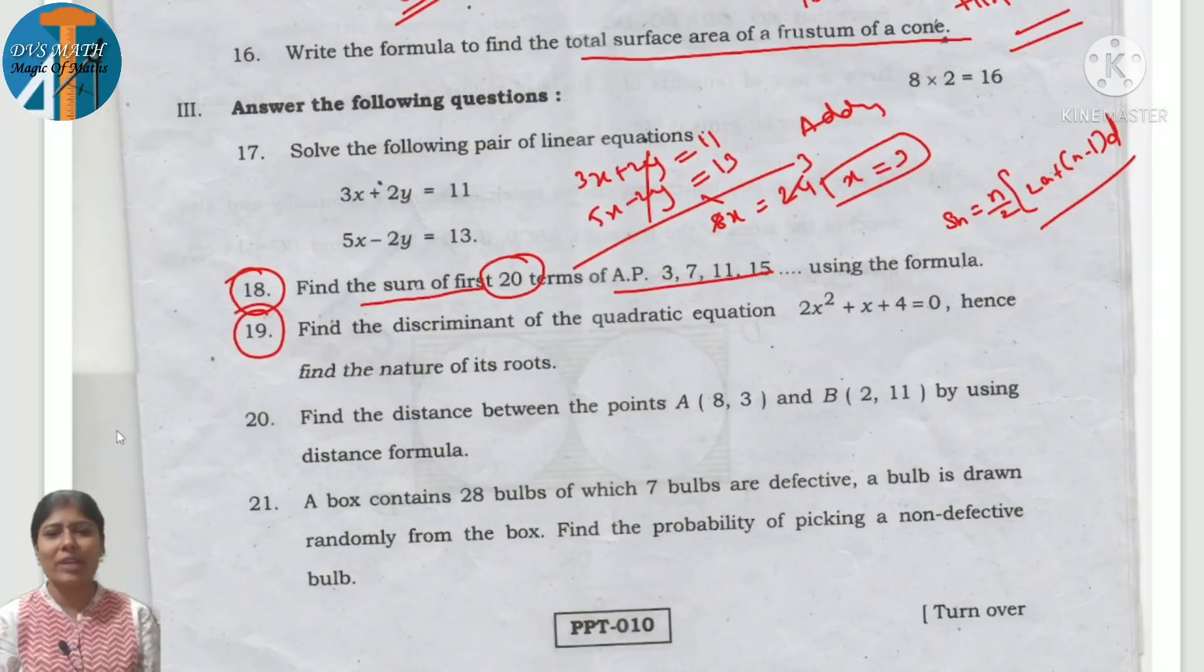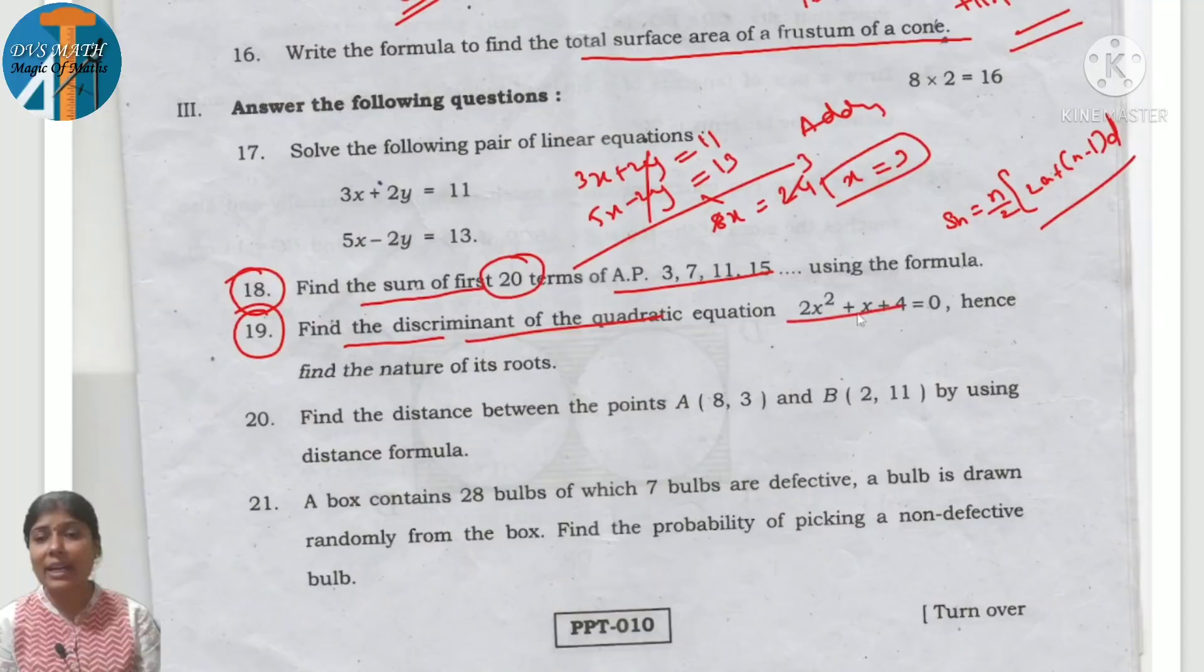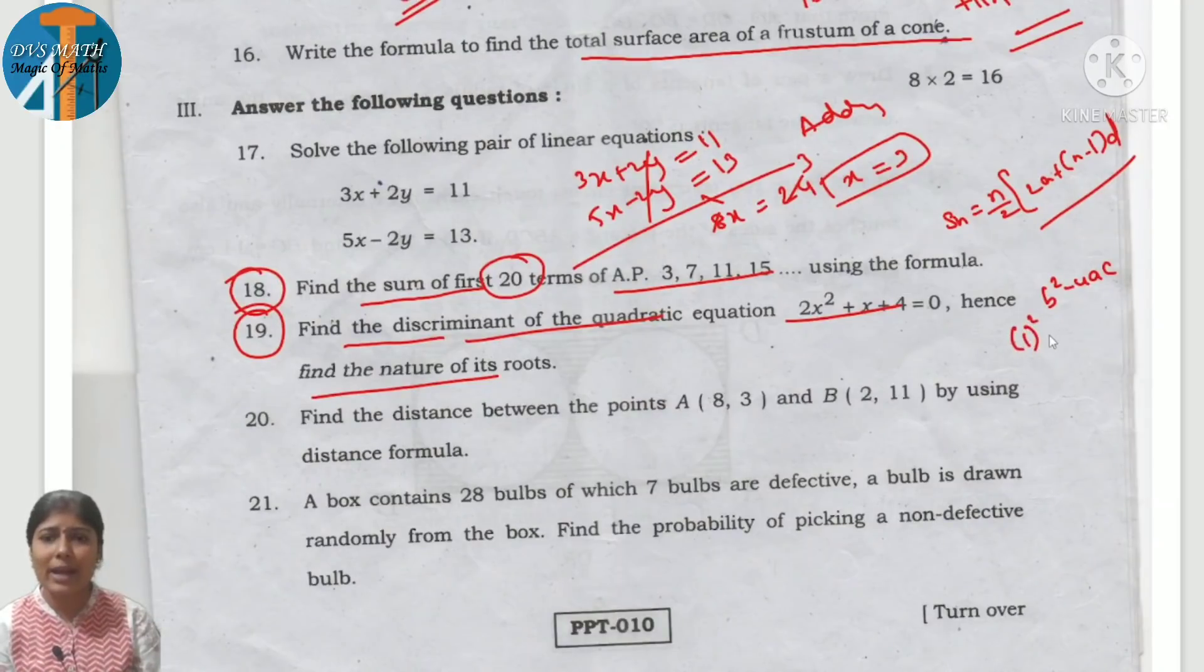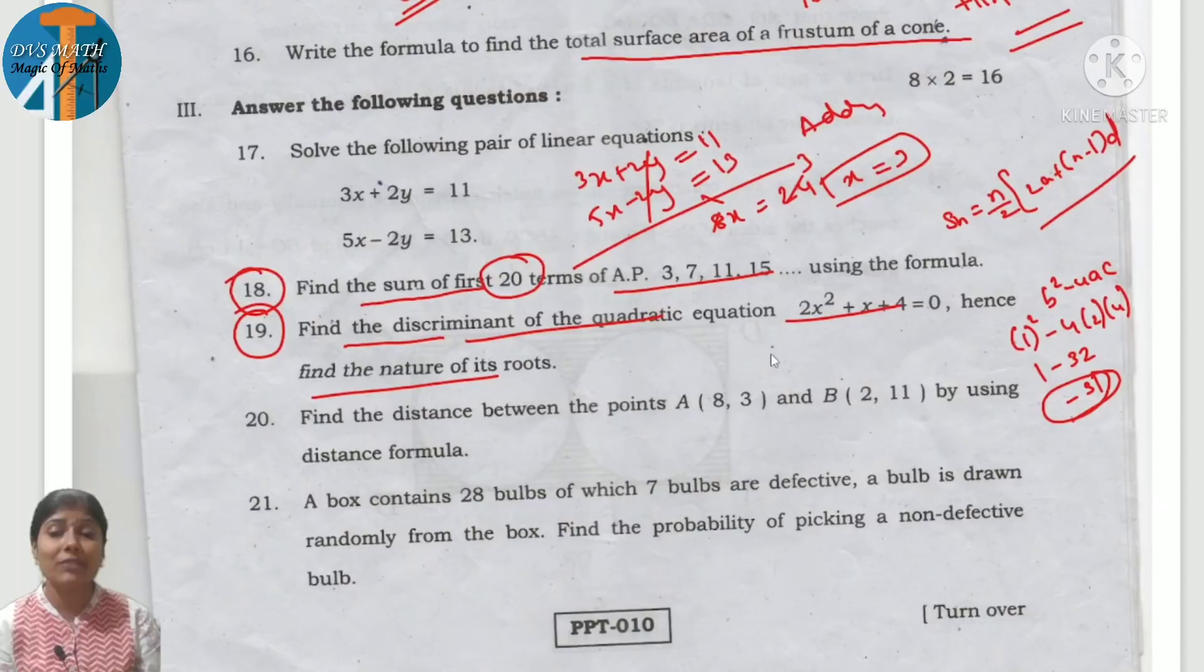18th question: find the sum of 20 terms of AP. They are using the formula: n by 2 times (2a plus (n minus 1) times d). 19th question: find the discriminant. They are asking to find the nature of roots. Discriminant is b square minus 4AC. b square is 1 square minus 4 into A which is 2, times 4 is 32. 1 minus 32 is minus 31. Negative, so imaginary roots or no real roots.